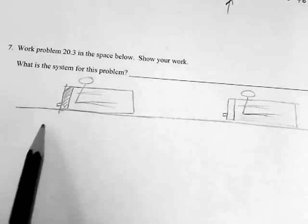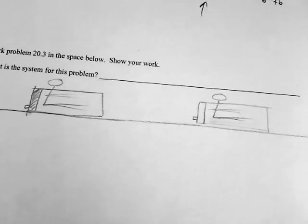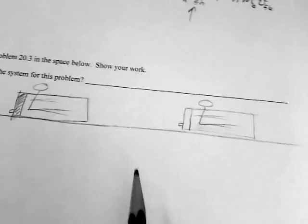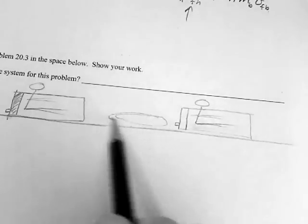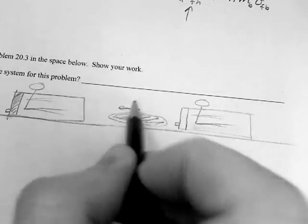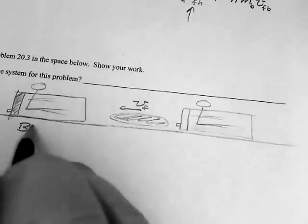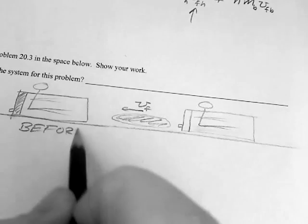Initially, all of this is at rest, and you have some kind of mechanism that squirts the water out of the back, kind of like a jet engine. Eventually, you're going to have all of this water exiting the ice boat with a velocity. This is the before scenario where everything is at rest.